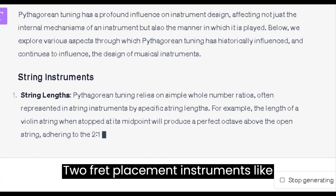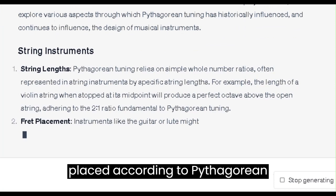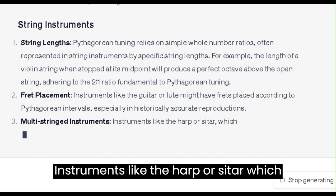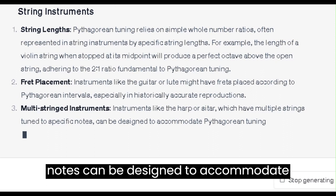2. Fret Placement. Instruments like the guitar or lute might have frets placed according to Pythagorean intervals, especially in historically accurate reproductions. 3. Multi-stringed Instruments. Instruments like the harp or sitar, which have multiple strings tuned to specific notes, can be designed to accommodate Pythagorean tuning easily.